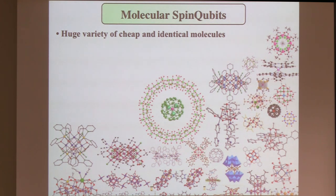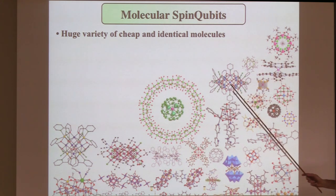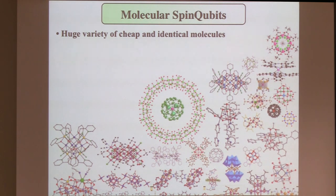There are a lot of chemists working more than 20 years; they have been working on a lot of different molecules. Here I show you a very small subspace of molecules which I personally studied myself. As a physicist, there's a huge variety of rather cheap, identical objects — magnetic molecules — which have a lot of nice physics inside, which remain to be studied.